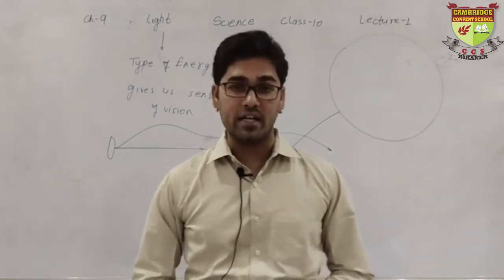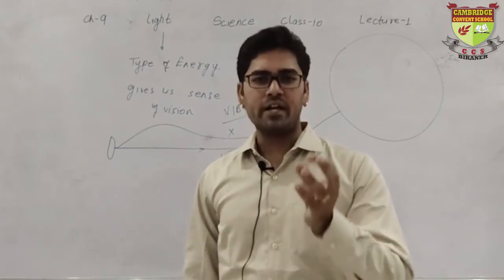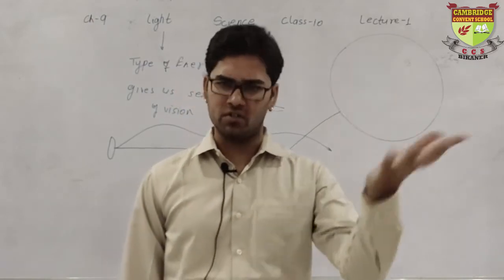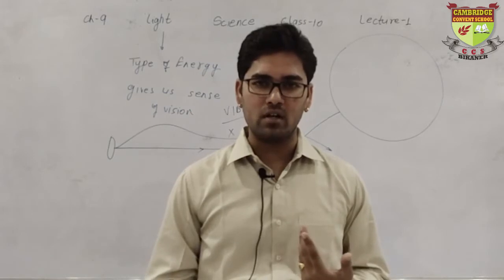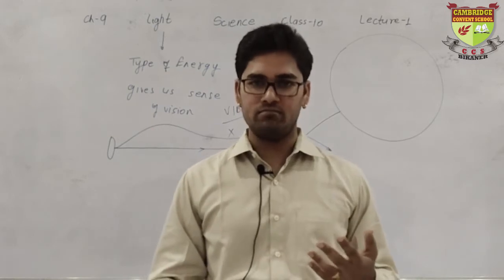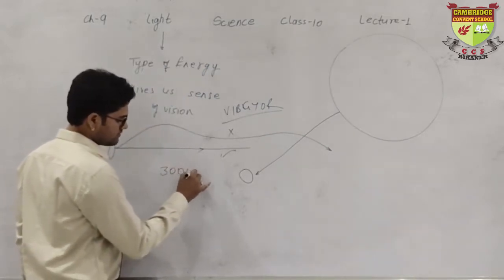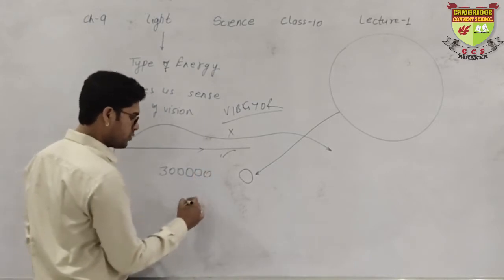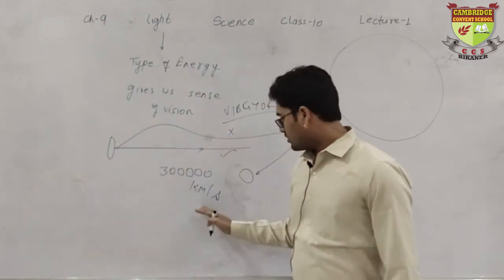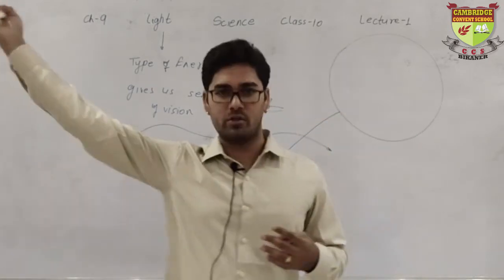And the last property is the light has the maximum speed in the universe. No object so far known travels faster than light. How fast? Just imagine. 100 km per second, 200 km per second, 500 km per second. Let me give you the exact data, not exact, almost data.